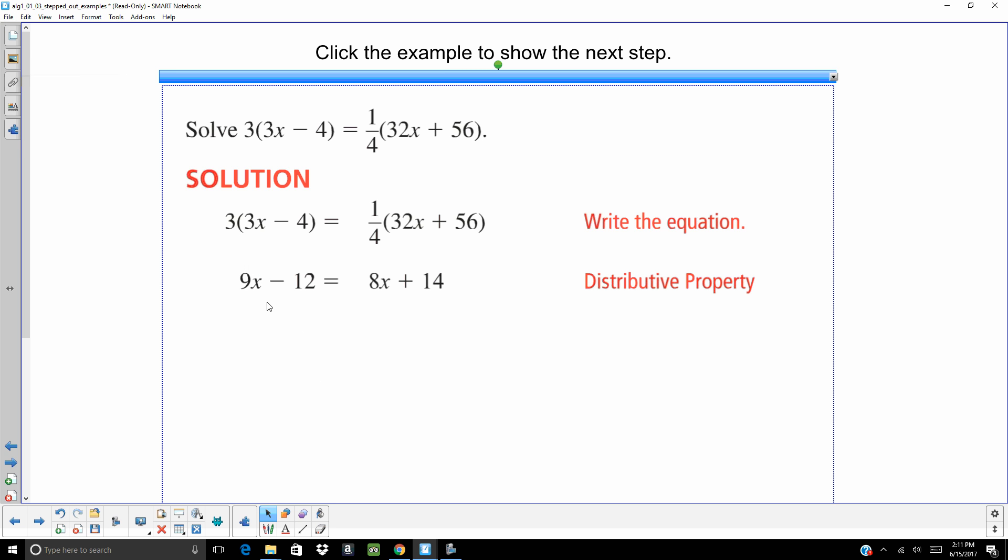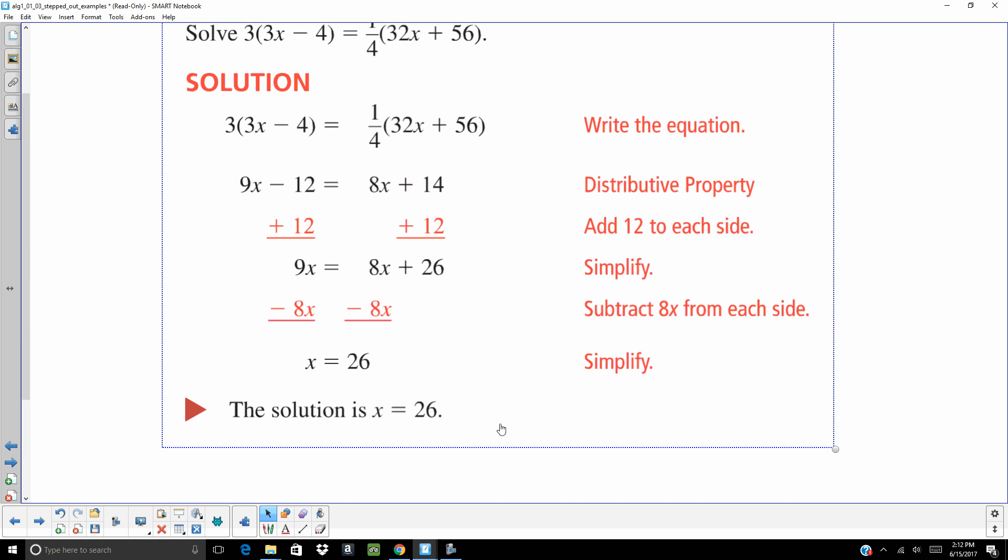Now, once we've used that distributive property, we need to get those x's on the same side of the equal sign. And there's actually two ways to do this. You can subtract 9x from both sides or you can subtract 8x from both sides. I personally like dealing with positives, so I'm going to subtract 8x so I don't have to deal with any negatives. Or we could go ahead and add 12. Now subtract your 8x, and you're going to get x equals 26. Again, you can go ahead and subtract that 8x first and then add 12. In this case, they added the 12 first, and that way is perfectly fine. Solution is 26.